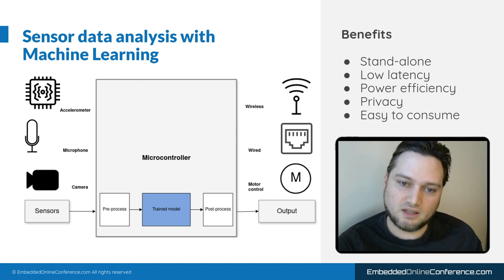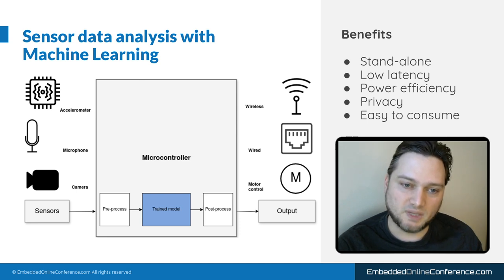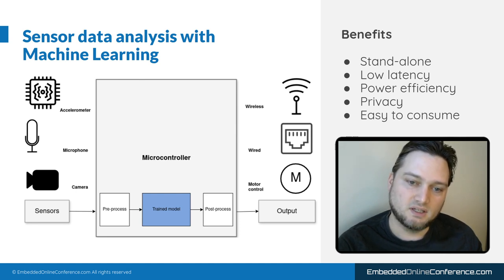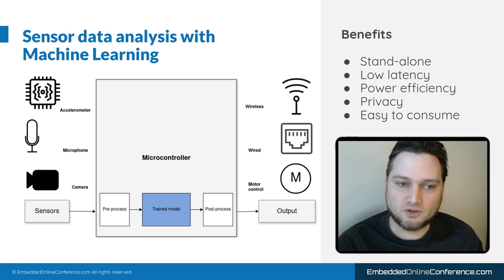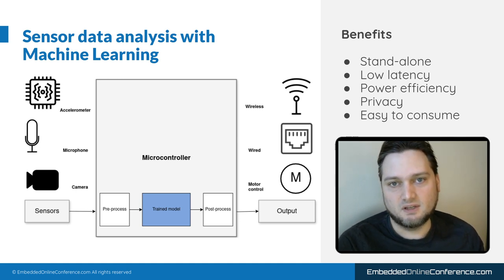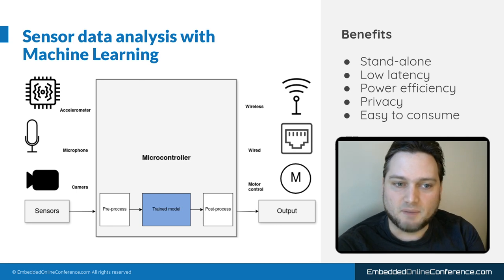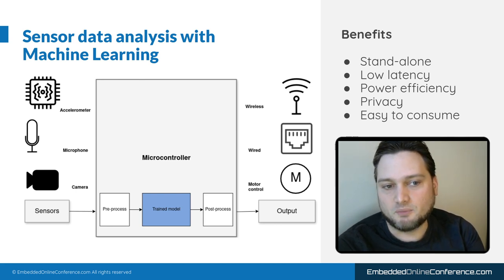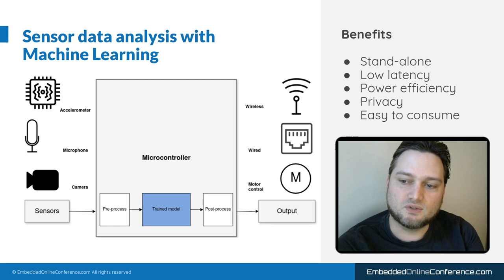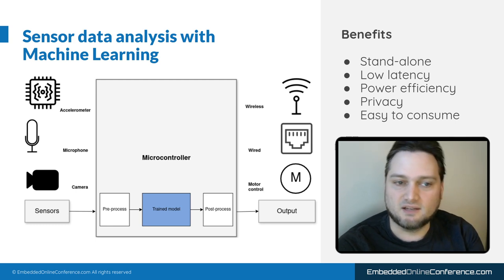Using machine learning in combination with digital signal processing allows analyzing complex phenomena. If this is done on the microcontroller we get a range of benefits. You can build a standalone system which has low latency and is not dependent on any network, and you can make it very power efficient, as well as preserve privacy because you do not need to transmit the raw and potentially sensitive sensor data.